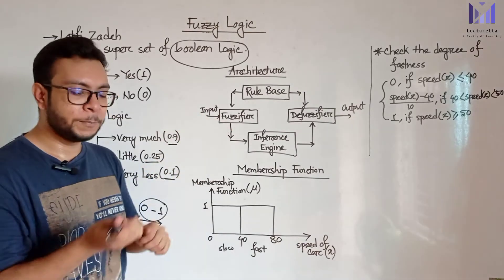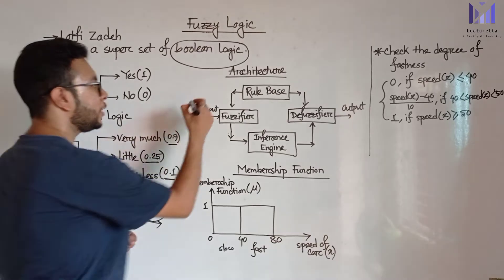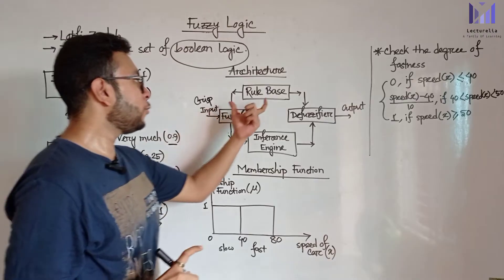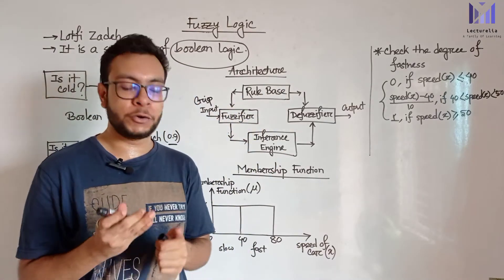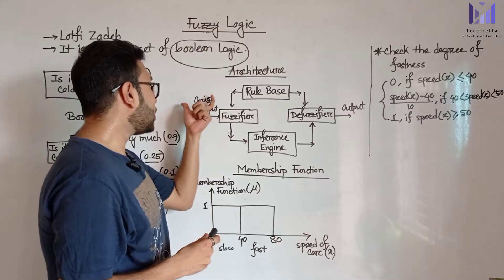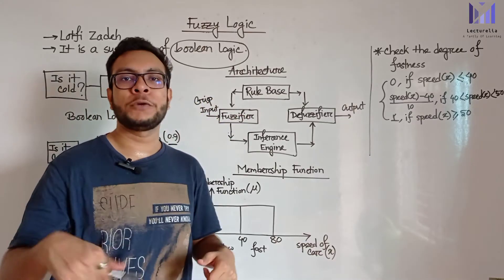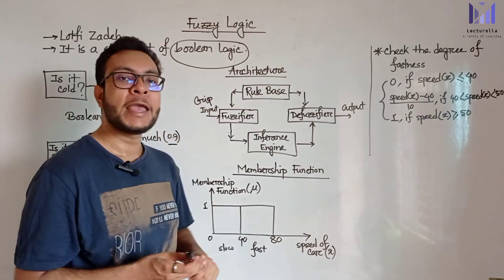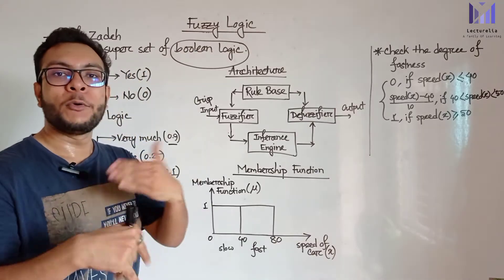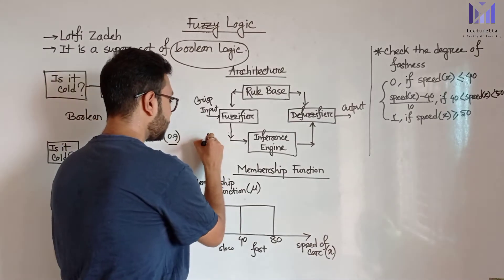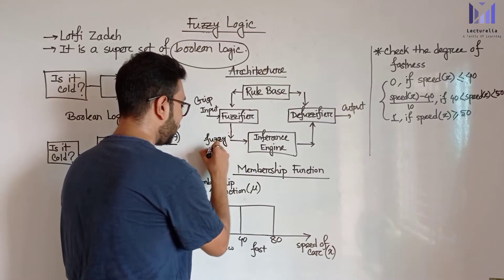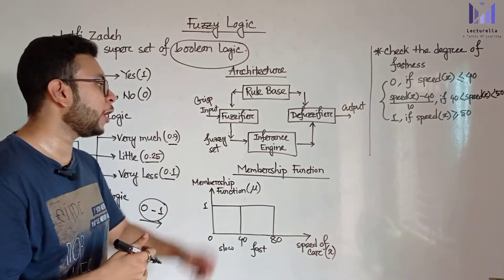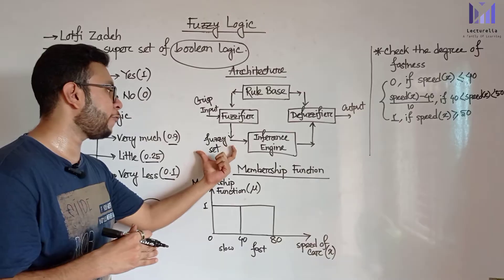First, input goes into the fuzzy system as a crisp value between 0 and 1. There is a rule base which contains if-then rules and conditions. The crisp input enters the fuzzy system and fuzzification operation is performed. The crisp input is then modified and converted into a fuzzy set.